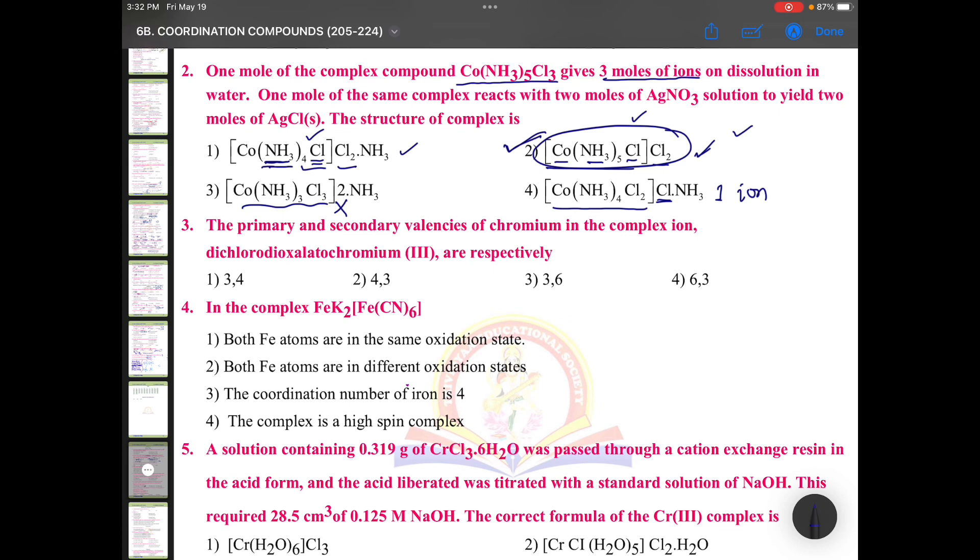See the question complete: one mole of the same complex with two moles of AgNO3 solution to yield two moles of AgCl. The structure is - this is the right one. This may be right if cobalt coordination number is five, but cobalt coordination number is six. Okay, so this is your right answer.